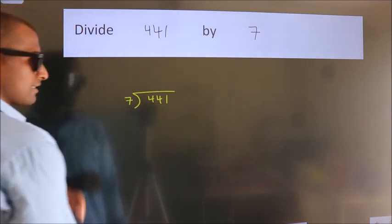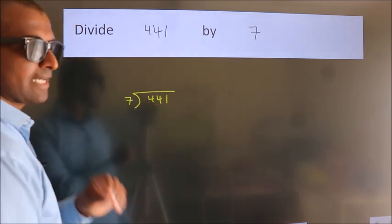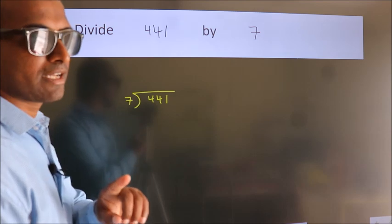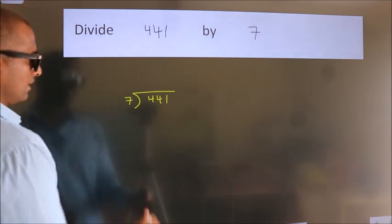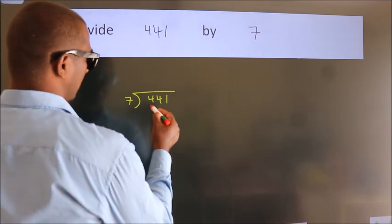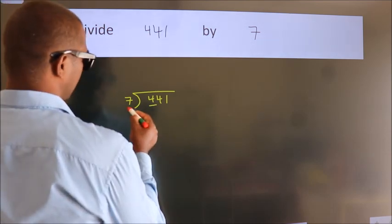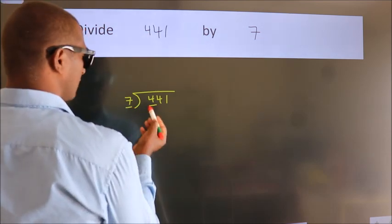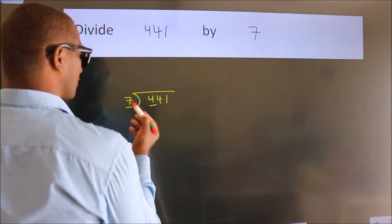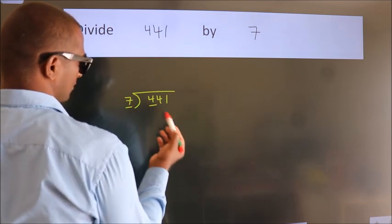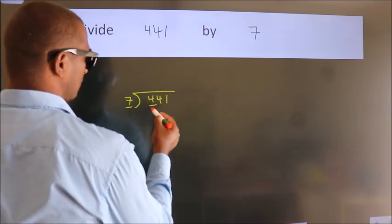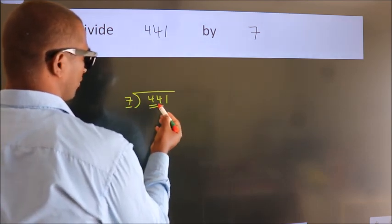This is your step 1. Next, here we have 4 and here 7. Since 4 is smaller than 7, we should take two numbers: 44.